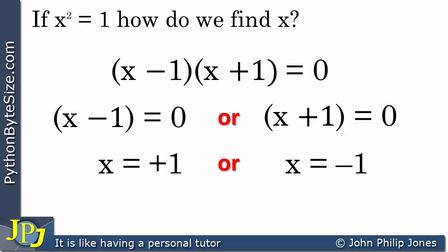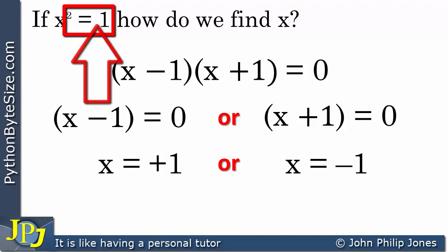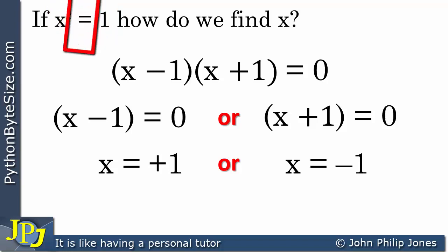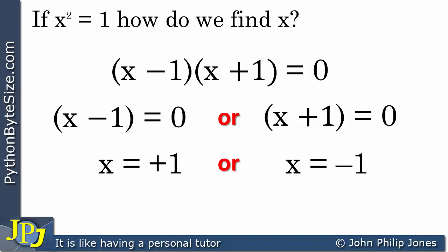Before I move on, let me remind you: it is x squared equals 1, or equivalently x squared equals plus 1 — if there's no sign, it implies positive. What I'm going to do on the next slide is have almost the same equation but with a negative value, so it's going to be x squared equals minus 1. Let's see if we can find x for that.